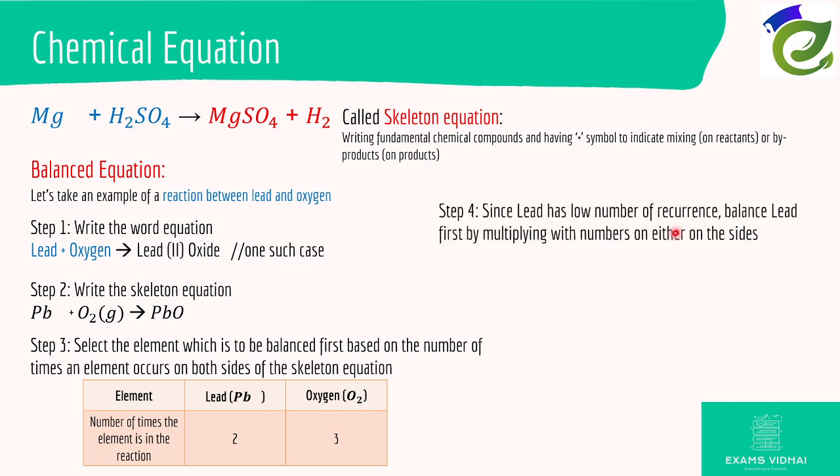The number which has occurred less is balanced first. Since lead has a low number of recurrence, first we multiply with certain integers or fractions if you want, but integers are mostly considered to balance the equation on both sides. You have one lead here and another lead here meaning you multiply with one and one here. So one lead giving one lead, that's it.